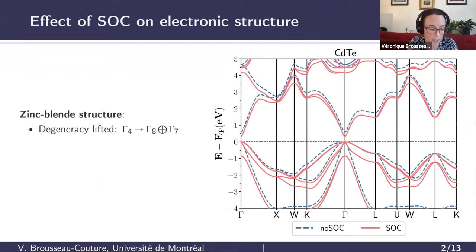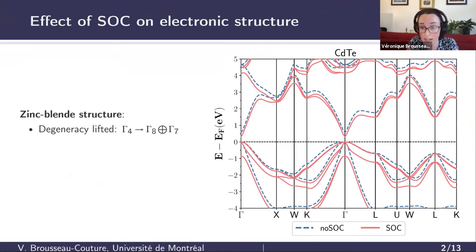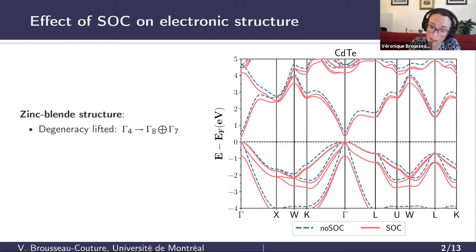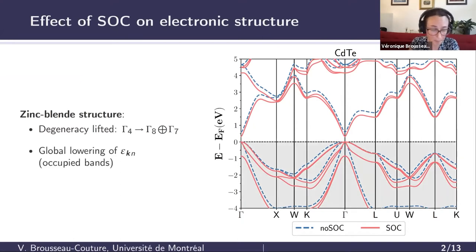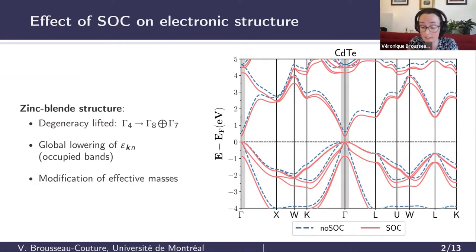Let's first recall how spin-orbit coupling affects the electronic structure at the DFT level. I will focus on zinc-blend materials. Here as an example you have the band structure of cadmium telluride. Without spin-orbit coupling (dashed blue lines), the valence band extrema is strictly degenerate. When we add spin-orbit coupling (solid red lines), this degeneracy is lifted such that the extrema is now the fourfold heavy-hole and light-hole bands, and we have the split-off bands pushed further down in energy. We can also observe a global lowering of the electronic energies in the occupied bands throughout the Brillouin zone, and the band curvature—hence the effective masses—are modified close to the band extrema.